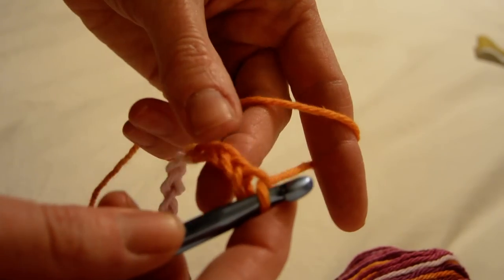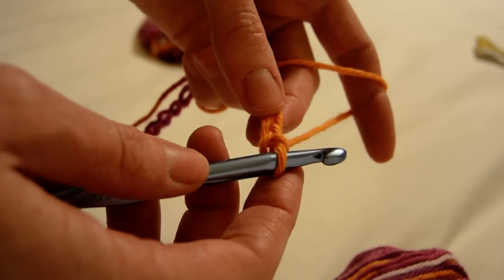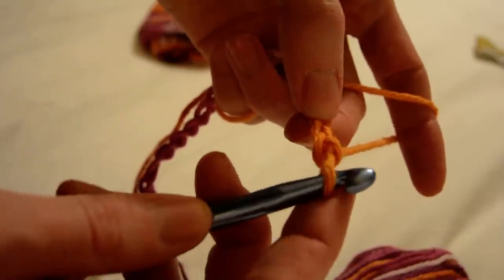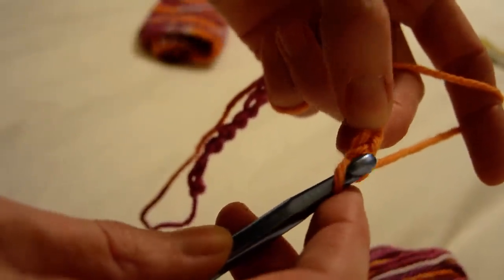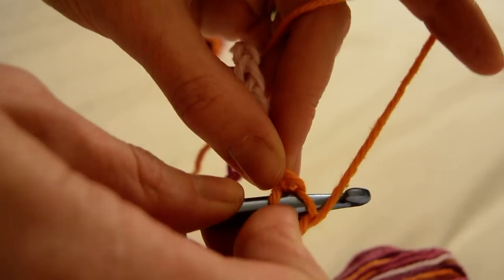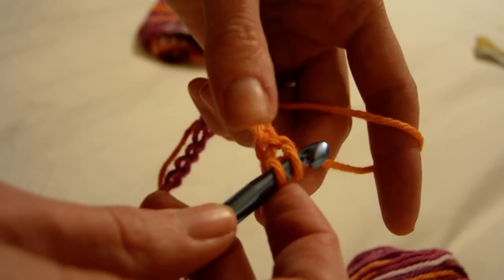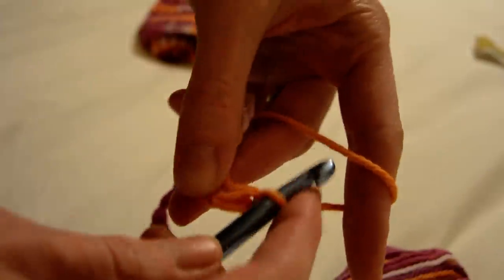Now we'll start our first stitch, and all we're going to do is the single crochet, the most basic stitch. We can't go in this first one because that's the one my yarn is in. We need to go in the next stitch. Push your hook through, grab the yarn, pull it through. You have two on your hook. Grab the yarn, pull through two.